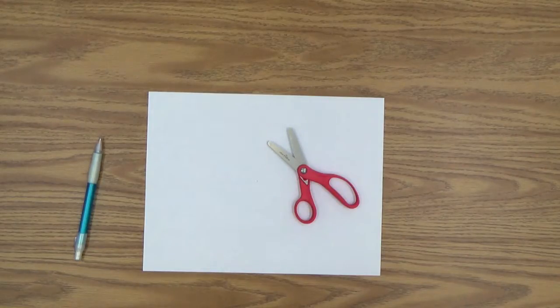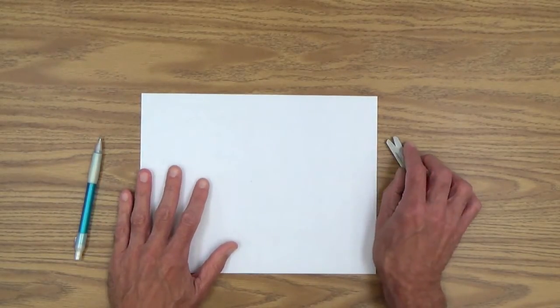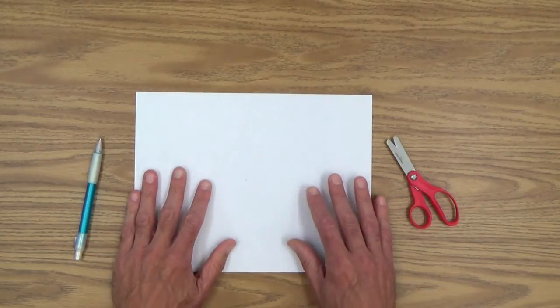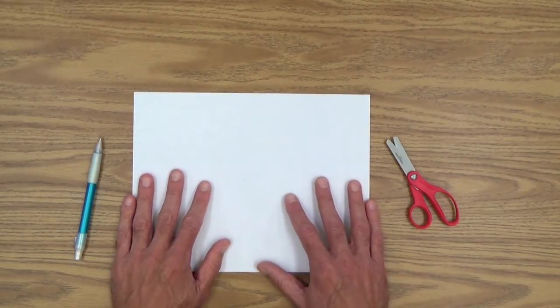Here are the materials that we will need for this lesson. Some copy paper, thin copy paper. Try to get the thinnest you can, 20 pound copy paper, because we're going to be folding it and cutting through several layers. So the thinner the better.